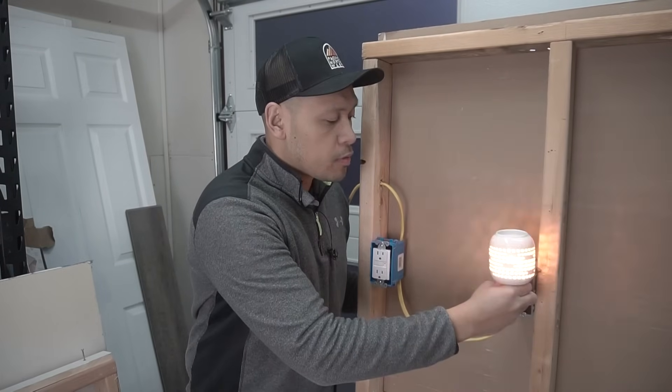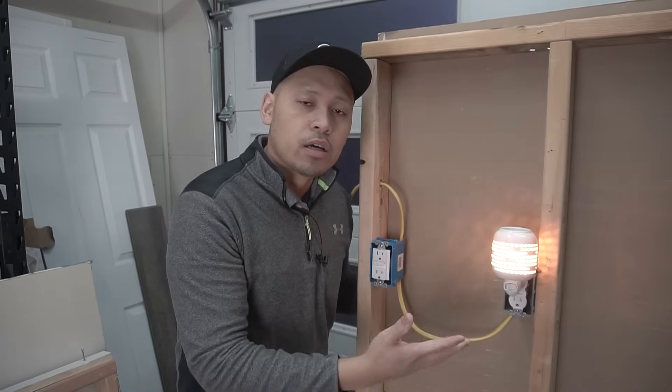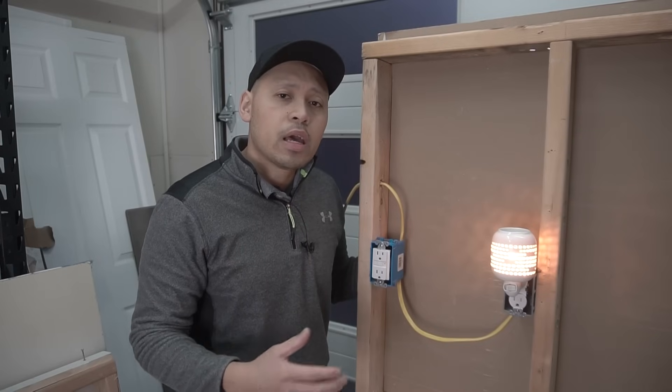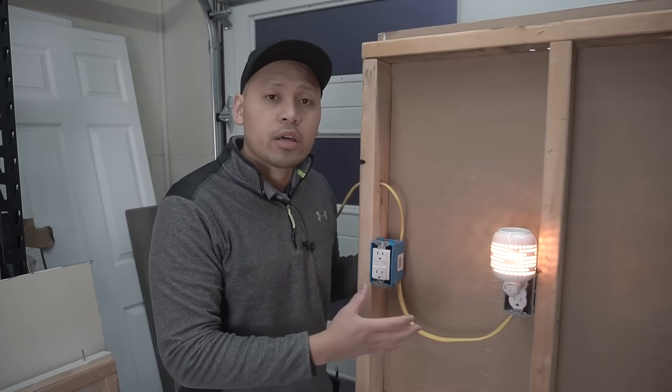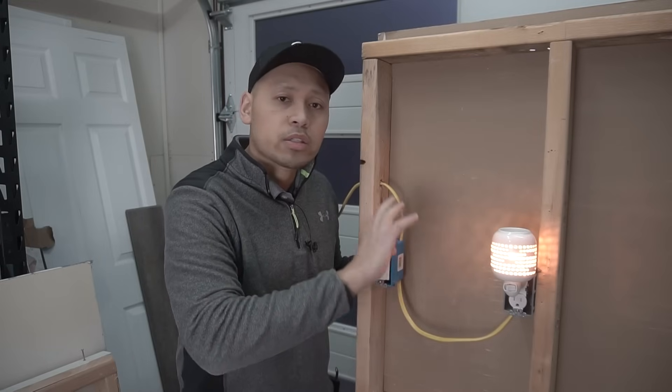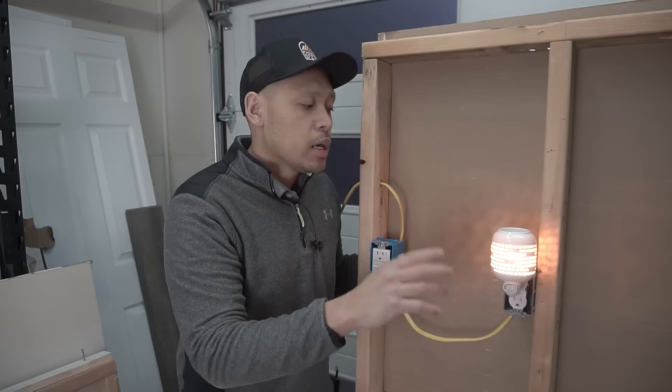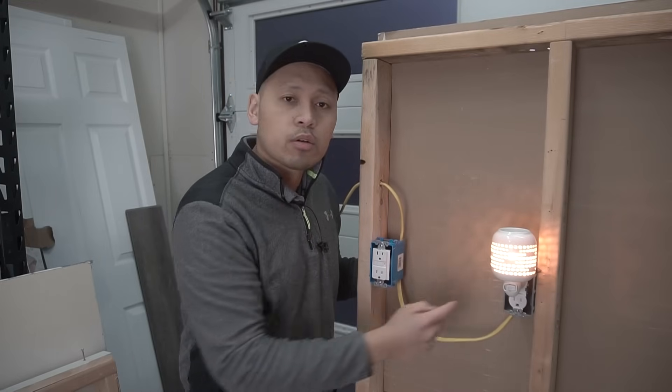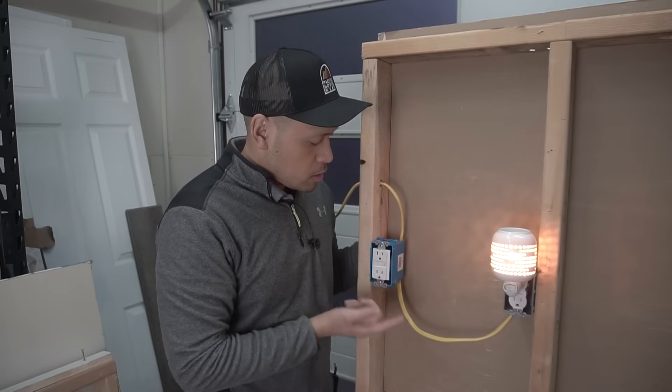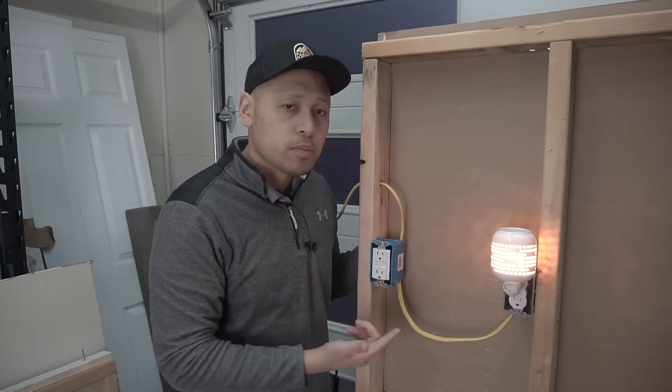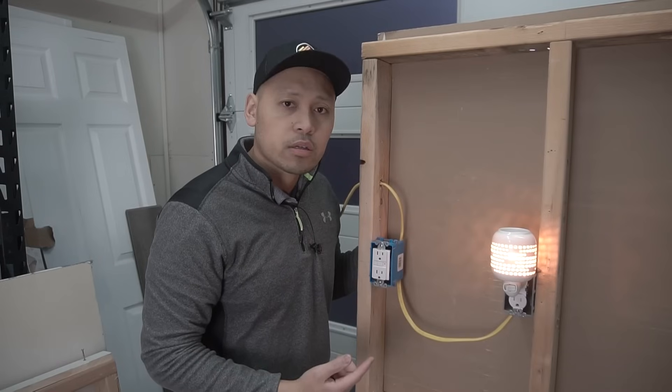This receptacle right here is still powered on. This scenario right here is probably if you're in a bathroom and you just want GFCI protection on where the sink area is and the rest that's going through where it's far away from any wet area is still connected with a receptacle, like just like what you see here. So, if this trips right there, in case that trips, this receptacle is still going to be on.